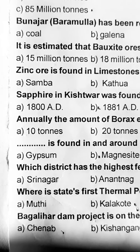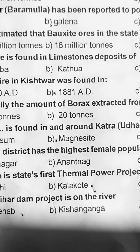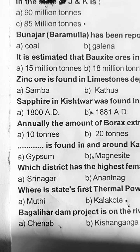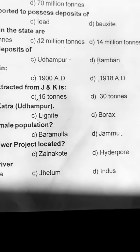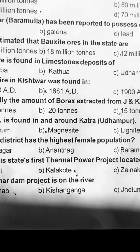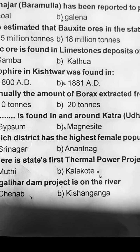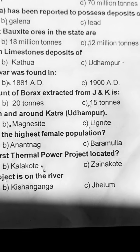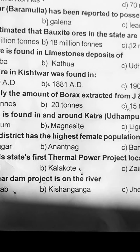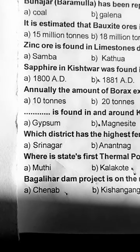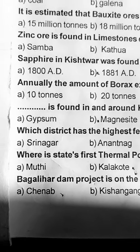Next question: which district has the highest female population? Iska sahi option hai Jammu. Next: where is the state's first thermal power project located? Yeh Kalakot mein hai, iska B part option hai. Baglihar Dam project is on the river — yeh sabhi ko malum hai, Chenab hai.